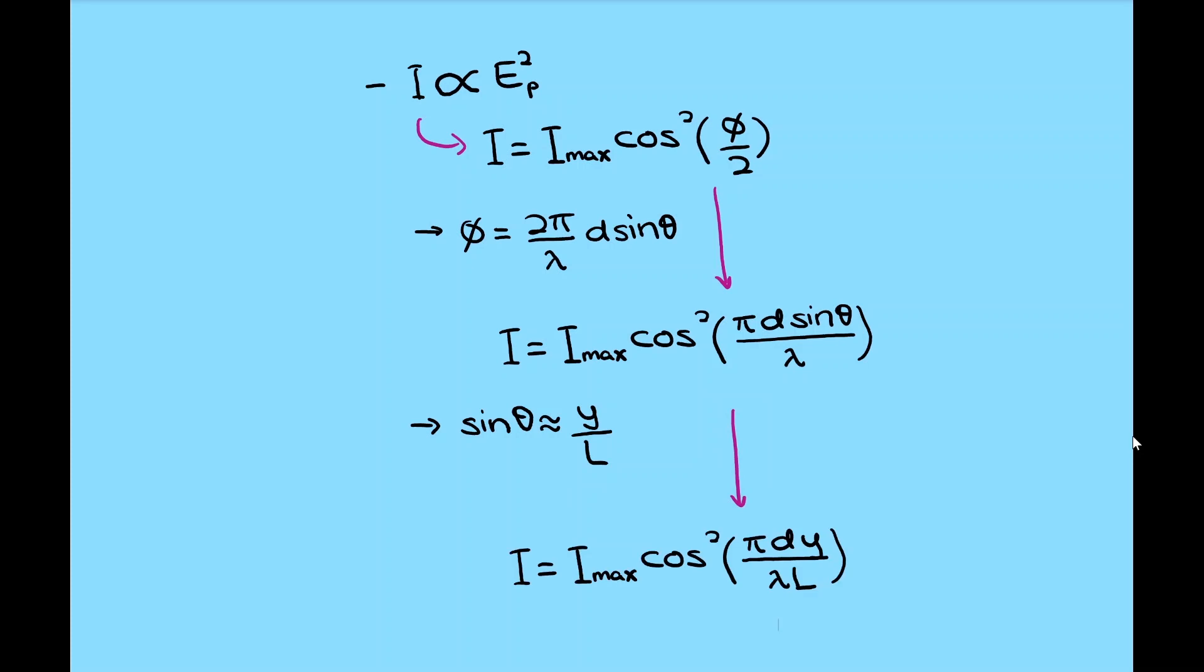And if we plot the intensity against wavelength, the graph will look like this, which basically the fringes that we observe on the screen.